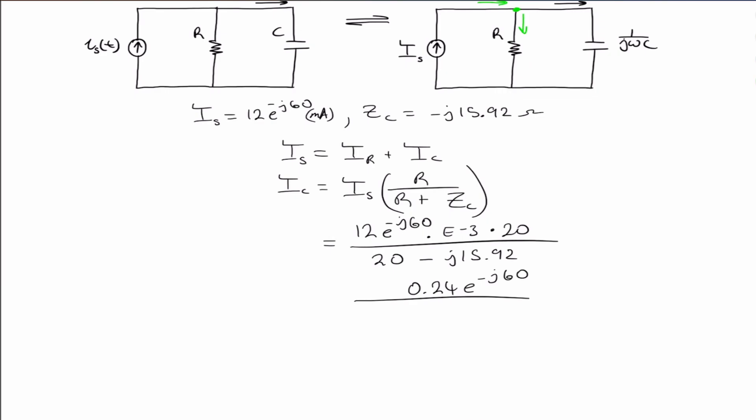We apply complex algebra to our denominator. The positive square root of 20 squared plus 15.92 squared times the complex exponential e to the j theta, where theta is inverse tangent of 15.92 divided by 20, which gives us minus 38.52 degrees.